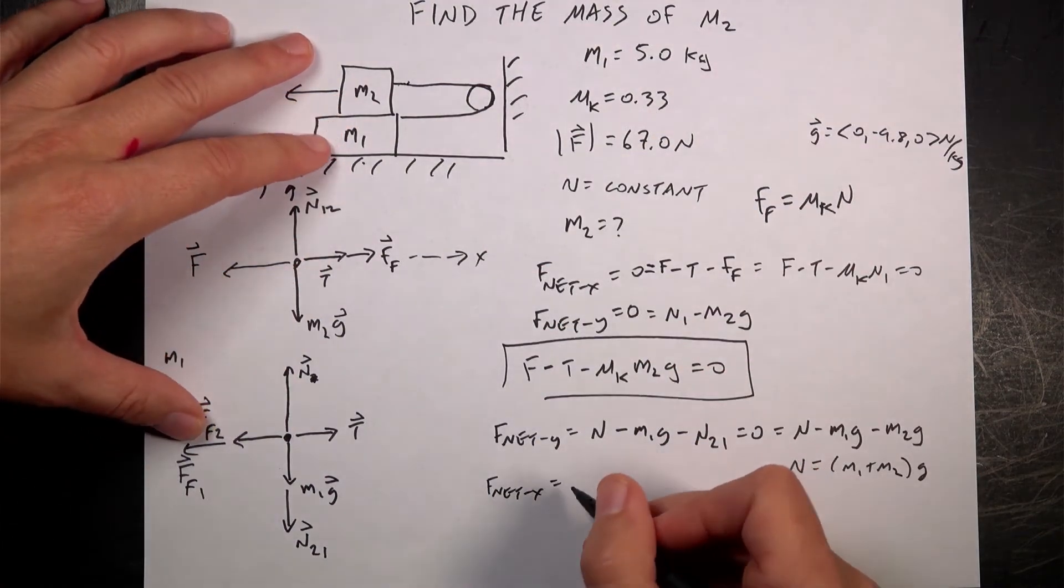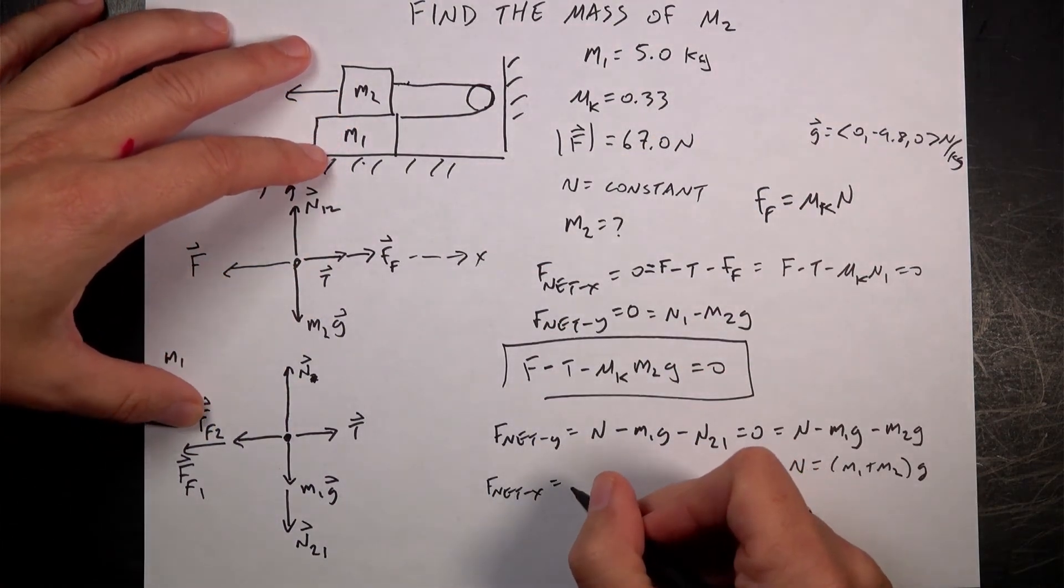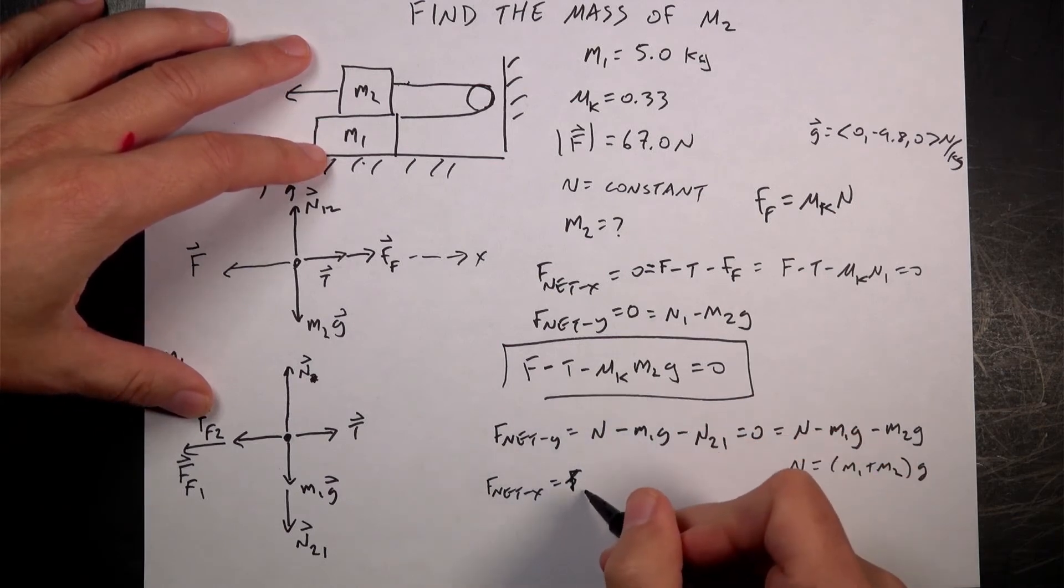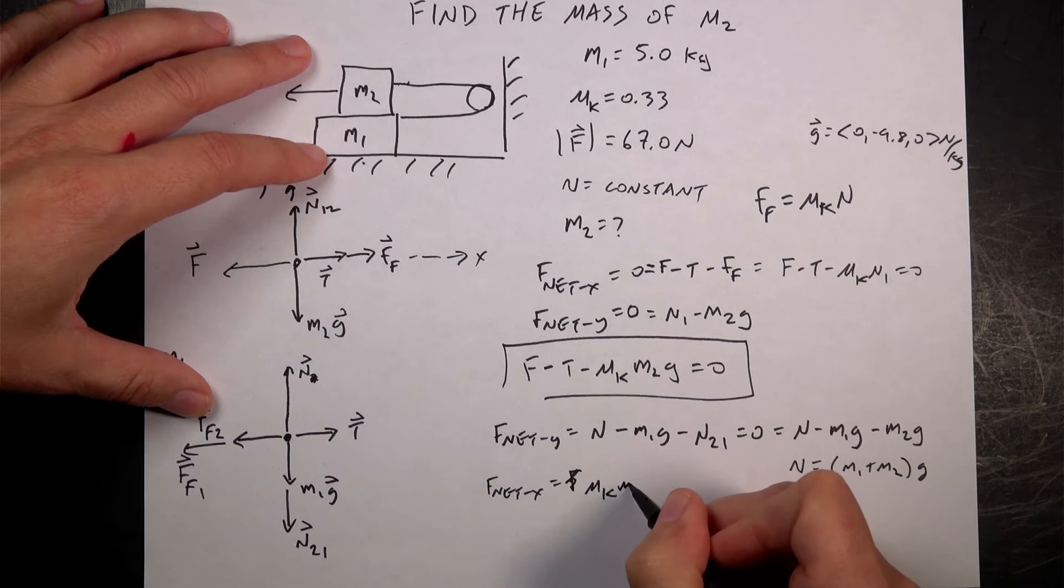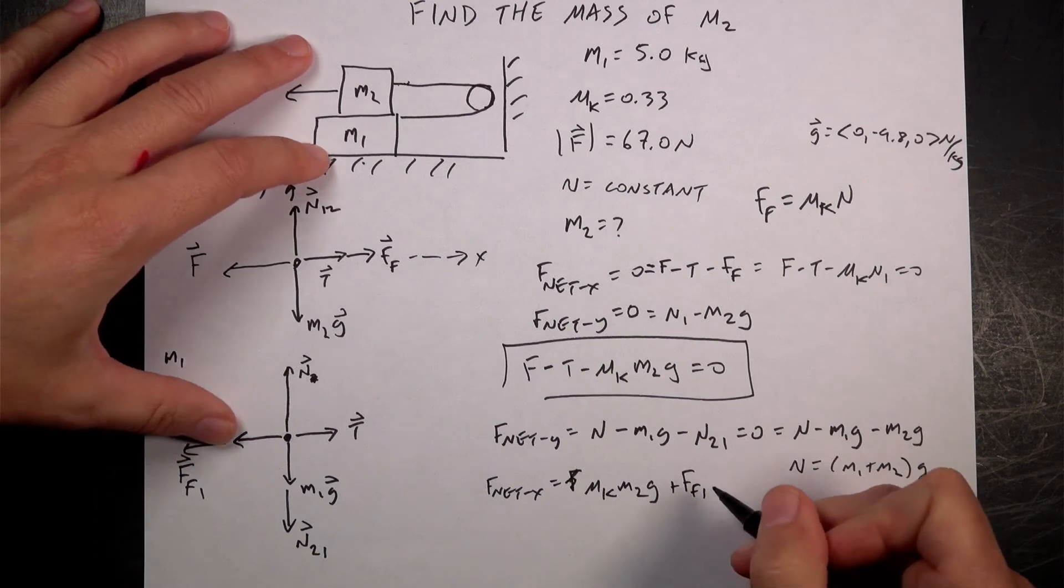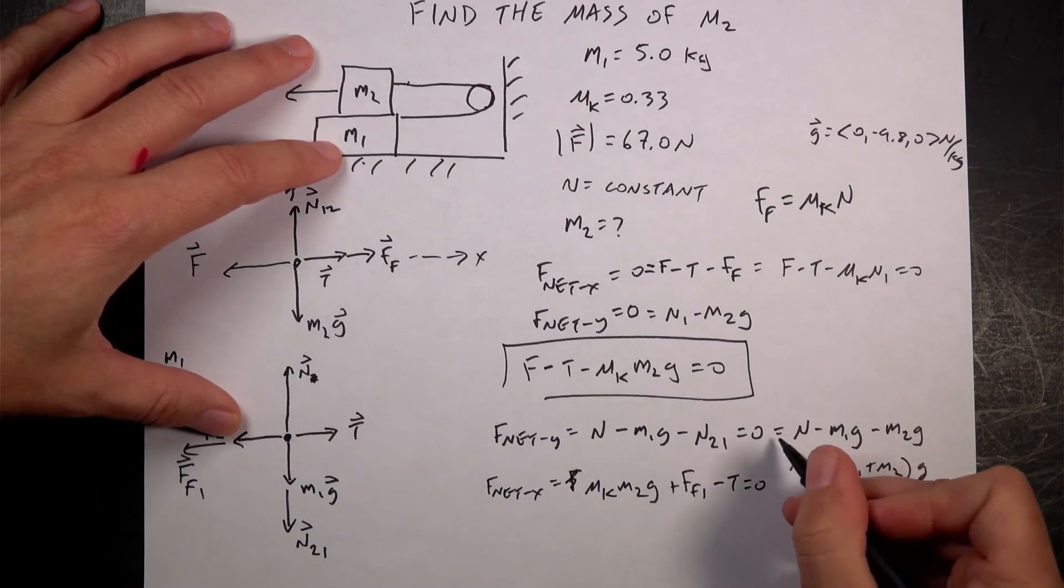So I have F friction 2, which I knew, right, is this. So it's going to be mu K M2G plus friction force 1 minus tension equals 0.